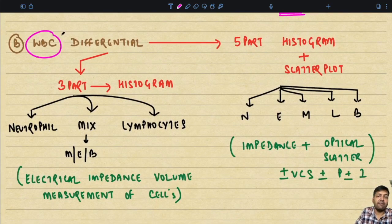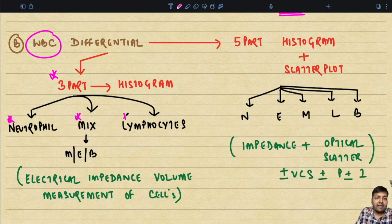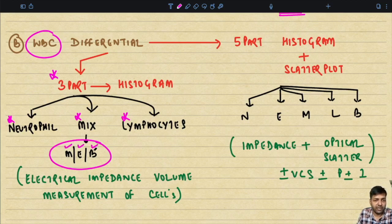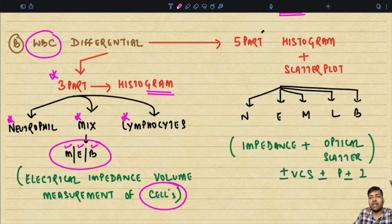The WBC differential can be done in two ways. In the three-part automated analyzers, the three-part differentiates WBCs into neutrophils, a middle mix, and lymphocytes. The middle or mix variety in normal individuals comprises monocytes, eosinophils, and basophils. This is based on electrical impedance-based volume measurement of the cell. The three-part machines also generate histograms: RBC histogram, platelet histogram, and WBC histogram.